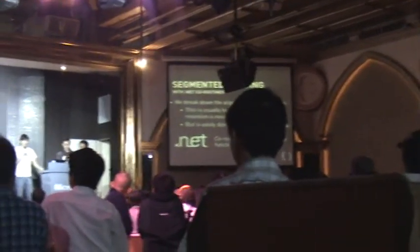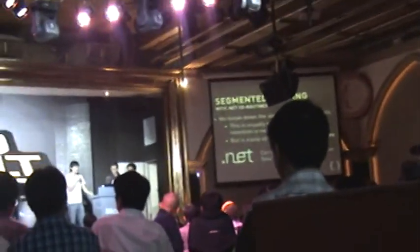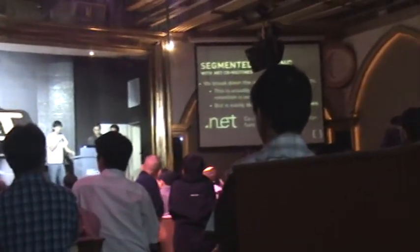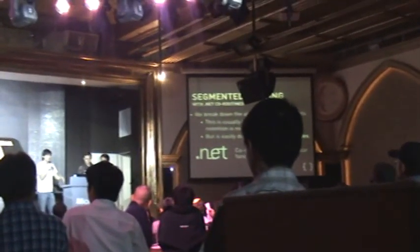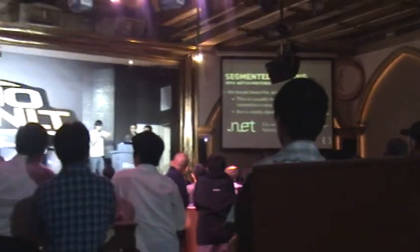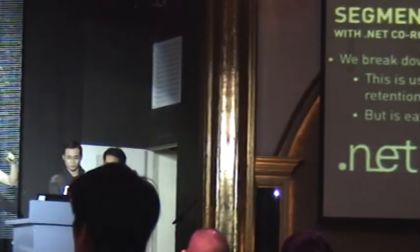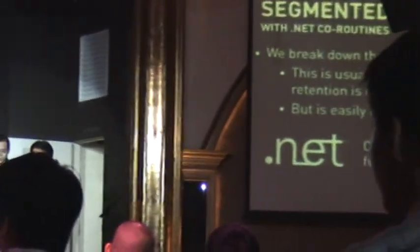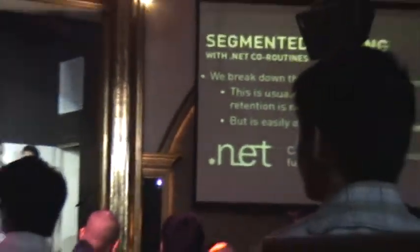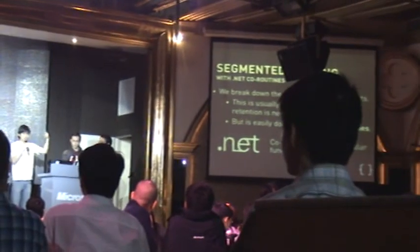But fortunately, .NET has what we call coroutines. Coroutines enable us to pause function execution when we want, then resume execution when we want to continue the function.